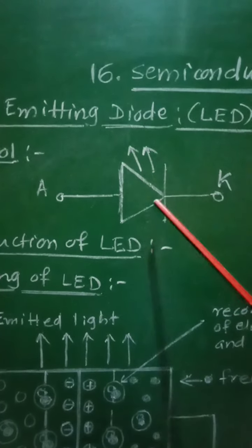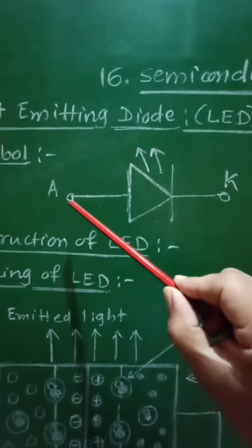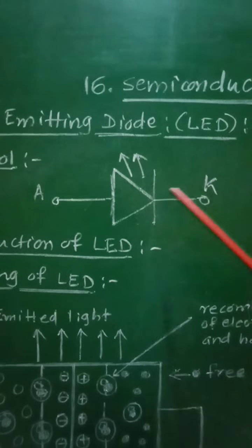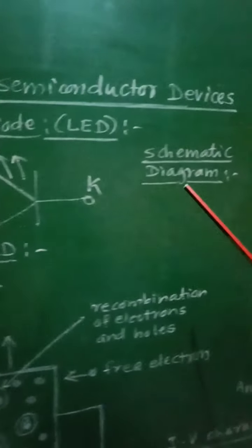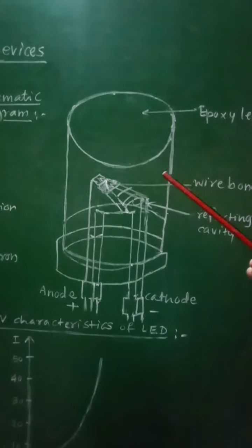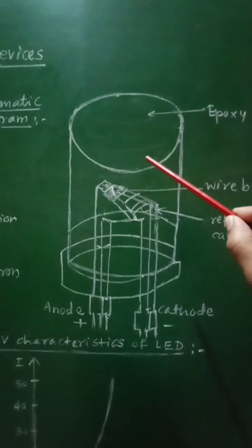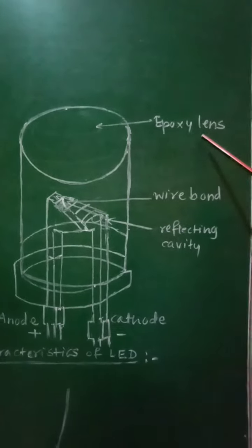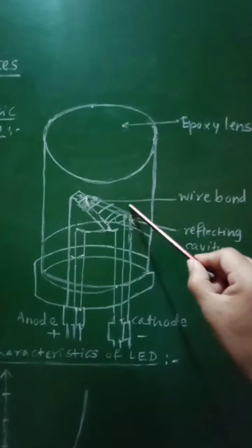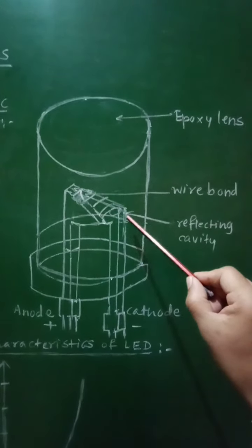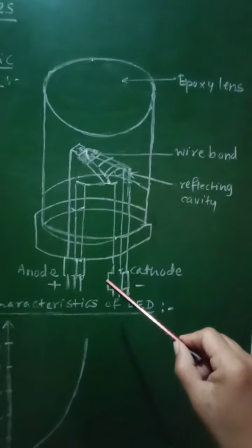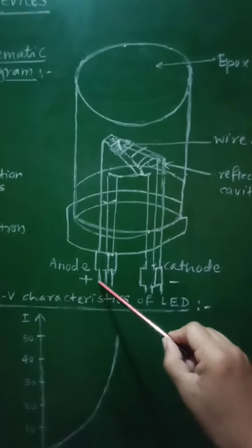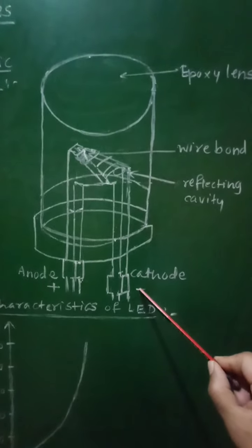Symbolically, the LED is shown as a PN junction diode having two electrodes: anode and cathode, from which light is emitted. The schematic diagram includes an epoxy lens, a wire bond, a reflecting cavity, and two electrodes connected in the external circuit — namely the anode (positive) and cathode (negative).